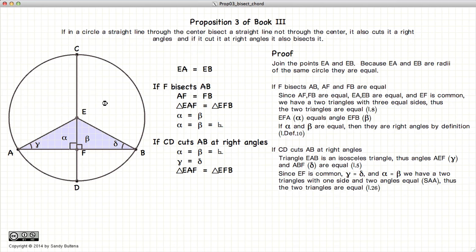Now, we have EF is common to both triangles, beta is equal to alpha, delta is equal to gamma. So, we have angle, angle, side.